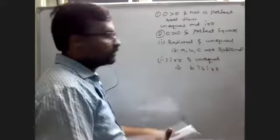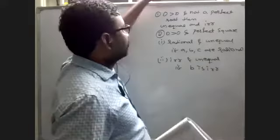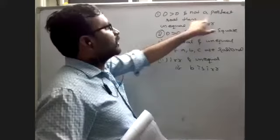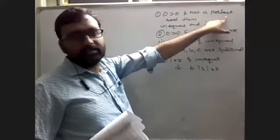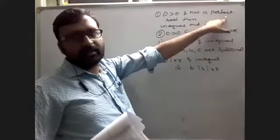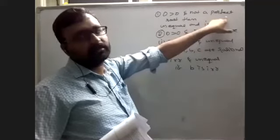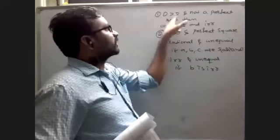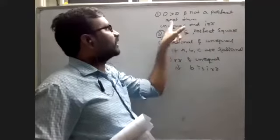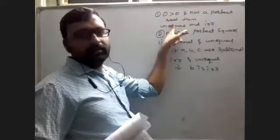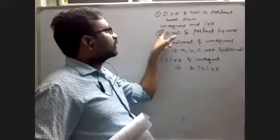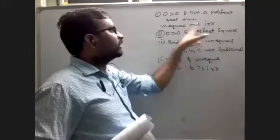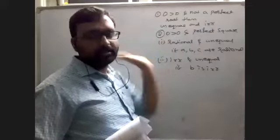If delta is greater than 0 and not a perfect square — like 23, 26, 27 — not like 25 or 49, then the roots are unequal and irrational. That is the first condition.